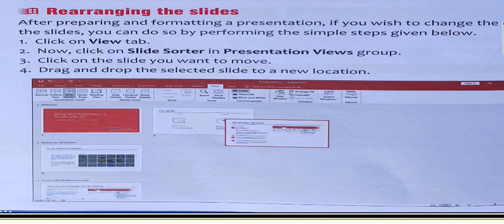Now click on Slide Sorter in Presentation View group. There are four different types of views in MS PowerPoint. You can use Slide Sorter view in Presentation group. Click on the slide you want to move. Then drag and drop the selected slide to a new location. You need to select the slide and drag it to the new location where you want to place it. This way you can cut or rearrange your slides. These are the basic steps to be followed to rearrange the slides in MS PowerPoint 2016.